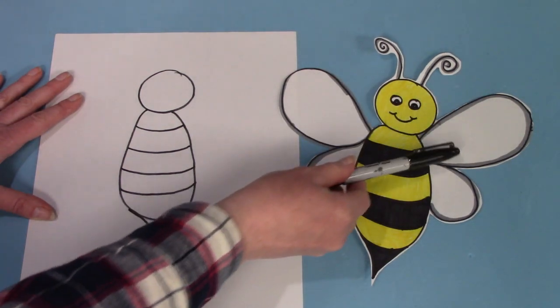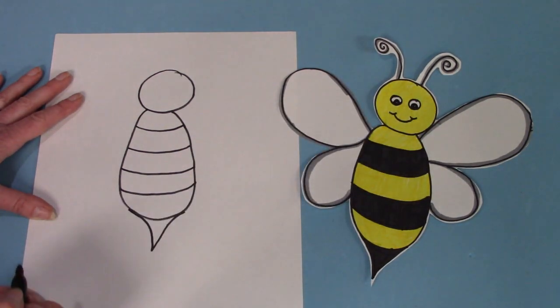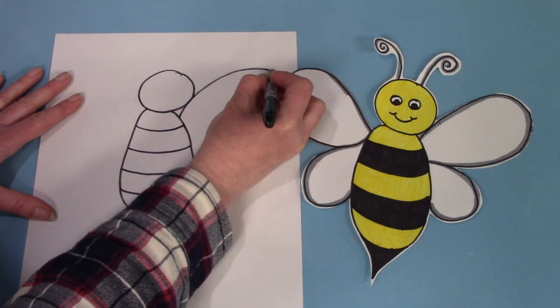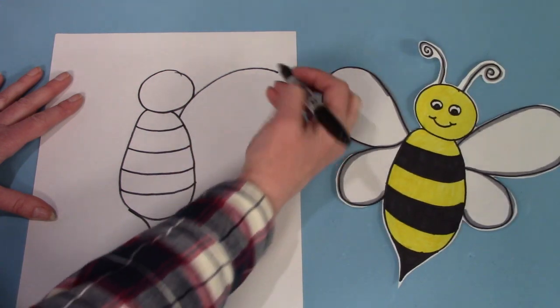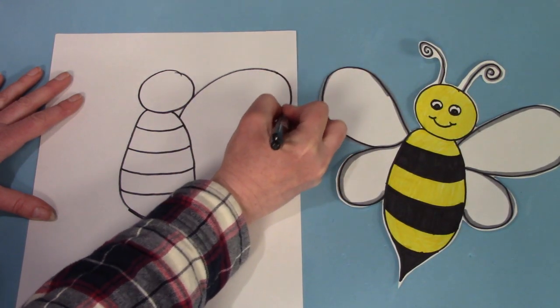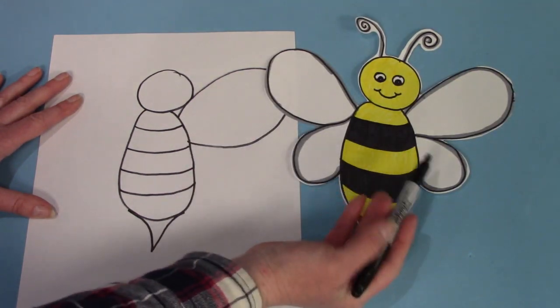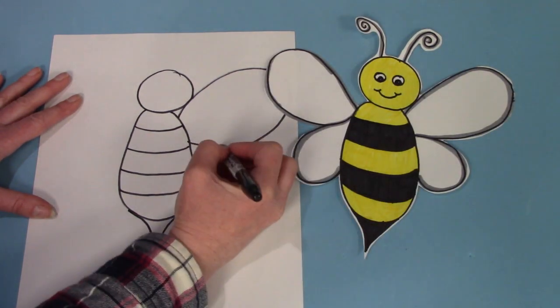And then let's try our wings next. The top wings are quite big. Oh, I ran out of room. And then our bottom wings are a little bit smaller.